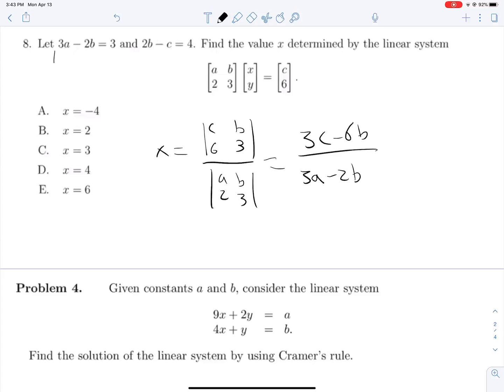We're told that 3A minus 2B is equal to 3, and let's just work from this forward. So 2B minus C is equal to 4. C minus 2B is equal to negative 4. 3C minus 6B is equal to negative 12.